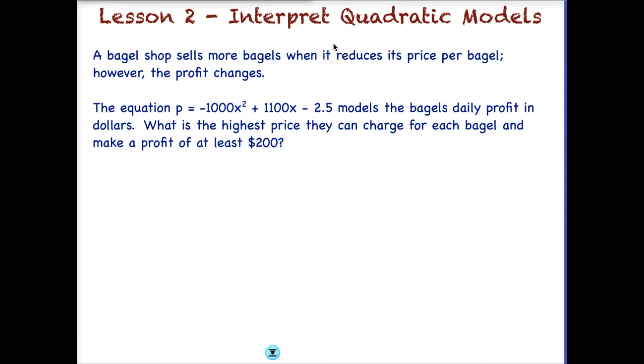Let's look at another example. So in this example, a bagel shop sells more bagels when it reduces its price per bagel. However, as we saw, your profit can change. So as you reduce your price per bagel, more people might purchase it, but you're getting less per bagel than if you kept your price higher. So we want to analyze this.